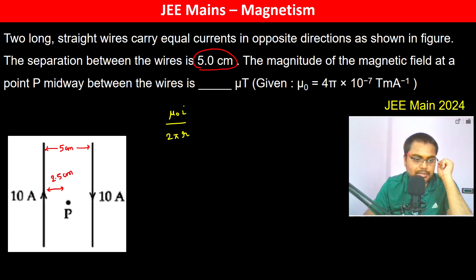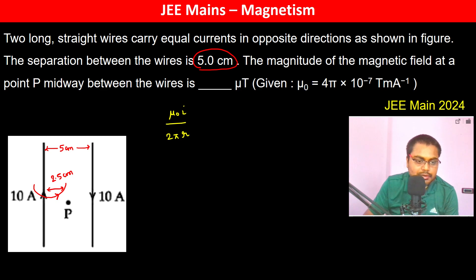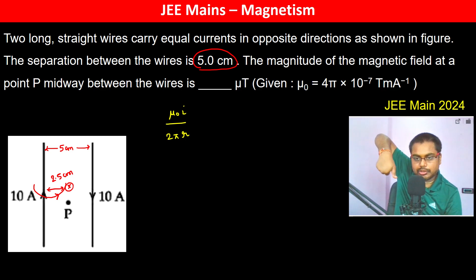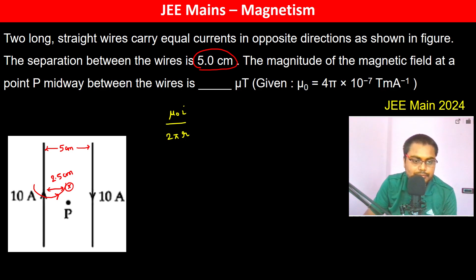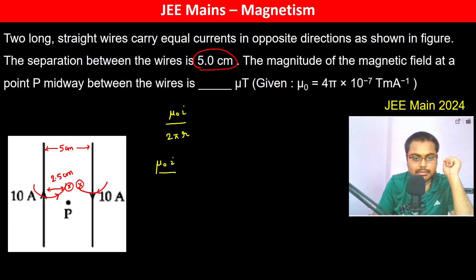For the 10 ampere wire on one side, the field is directed downwards. For the other 10 ampere wire on the right, the field is again directed downwards. So the magnetic field is downwards due to both wires. Therefore the total field is μ₀I / 2π × 2.5 centimeters, contributed by both wires.